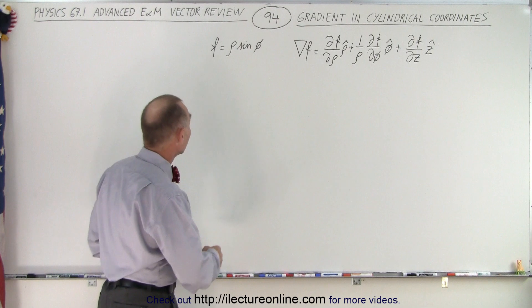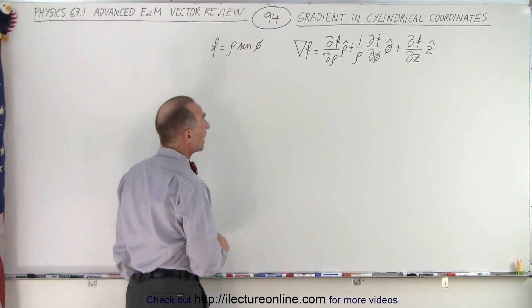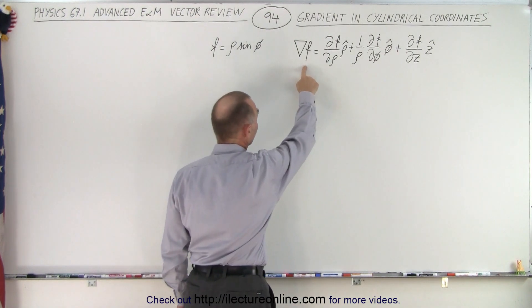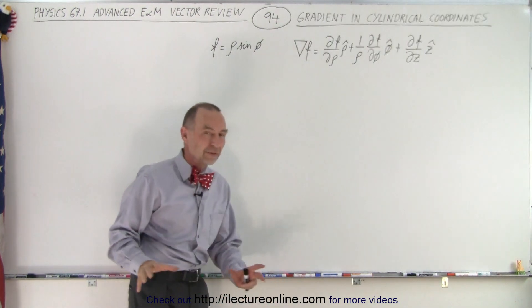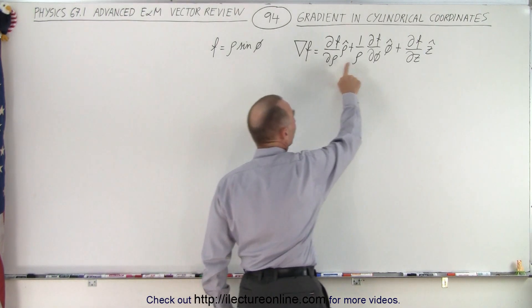So here we have an example. Let's say that our function, this is a scalar function, is equal to rho times the sine of phi. And here we have the gradient of that scalar function. Of course the gradient will give us a vector quantity. Notice the unit vectors rho, phi and z.